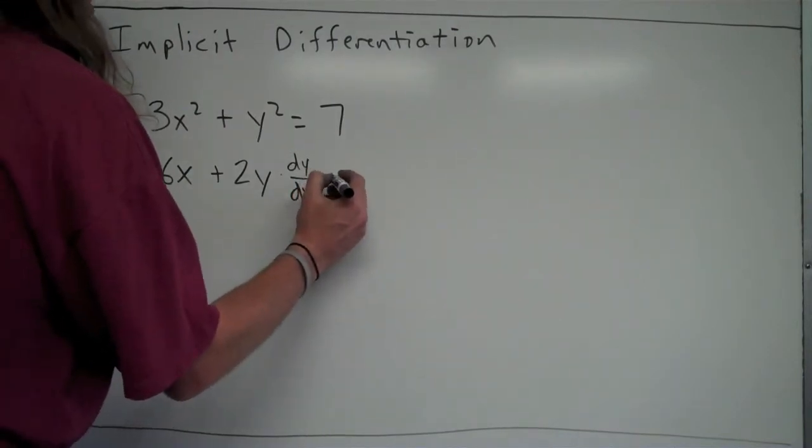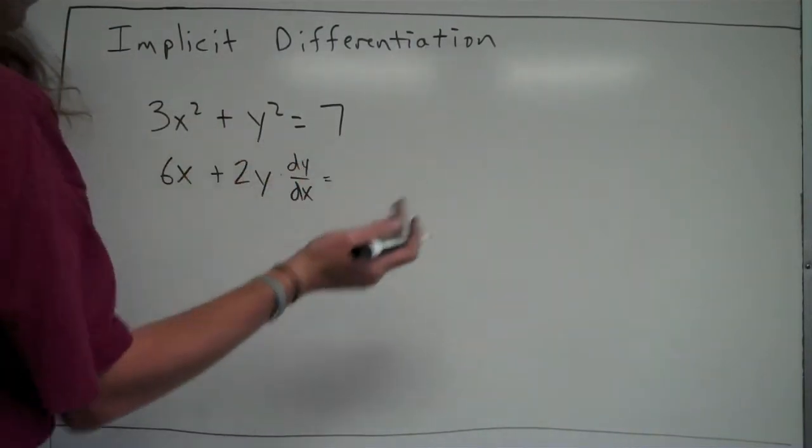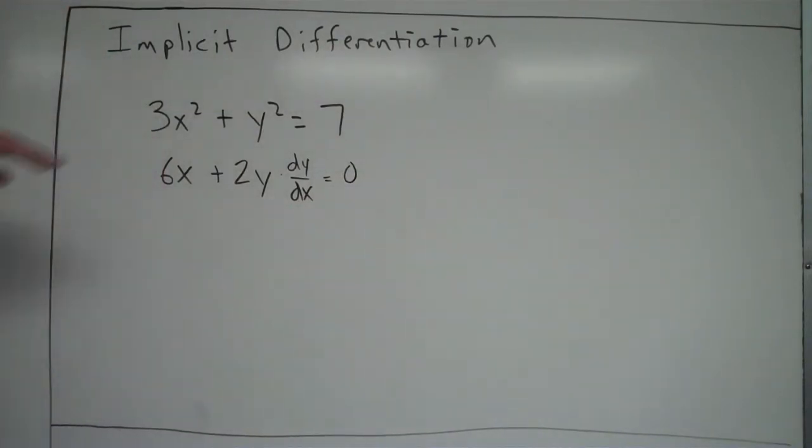It's kind of strange. But again, just remember, whenever you take the derivative of y multiply by dy over dx. The derivative of 7 is just 0. So this is the initial step right here, the initial implicit differentiation step, very important.